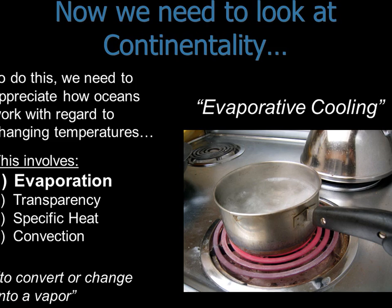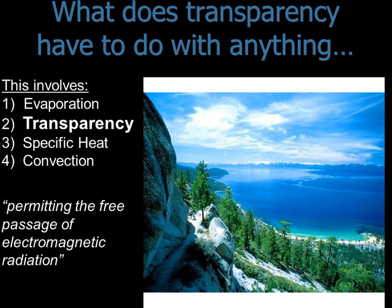The first reason is evaporative cooling: water evaporates, and when it does it absorbs latent heat. The water molecules have to go from moving as liquid to moving fast as water vapor, and to make that jump they pull heat from the water and from the atmosphere, keeping that area cooler. The second reason is transparency: light can penetrate up to 100 feet into water, so you're heating up a large volume of the water column, not just the surface.